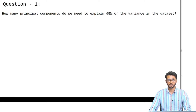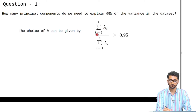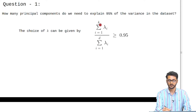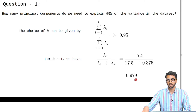When our dataset is in a very high dimensional space and we want to use principal components to bring it to a lower dimensional space, the question is how do we decide how many principal components to consider? For that we use the formula: the sum of lambda_i from i=1 to k, divided by the sum of lambda_i from i=1 to d. If we consider k=1, we get lambda_1 divided by (lambda_1 + lambda_2), and on substitution we get 0.979. This means that by projecting on just the first principal component, we can explain over 97% of the variance in the dataset.